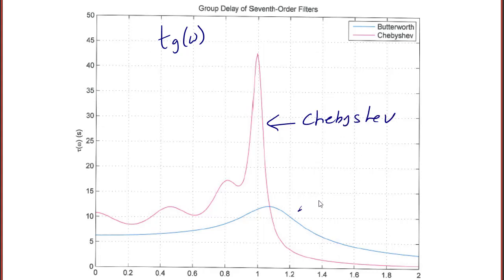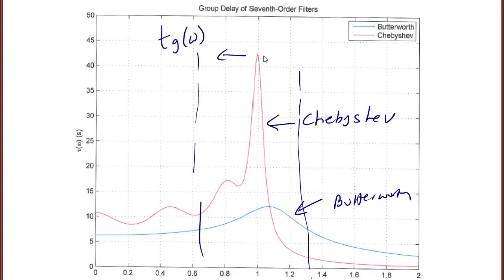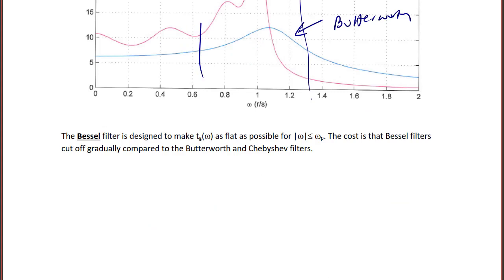Here we would have the Butterworth filter, and the part where the distortion is largest is in the transition. A large delay distortion near the passband edge is a typical characteristic of filters with a sharp cutoff, such as the Chebyshev filter. The Bessel filter is designed to make T_g(omega) as flat as possible for omega less than omega P, but the cost is that Bessel filters cut off gradually compared to Butterworth and Chebyshev filters — it has the slowest cutoff. In this plot, this represents omega P and this would represent omega S. This concludes lecture 8-3 on filter design for Chebyshev filters.